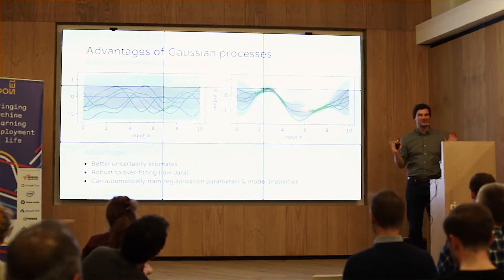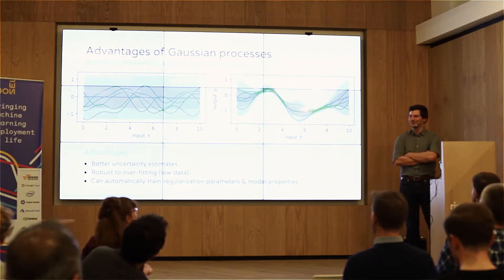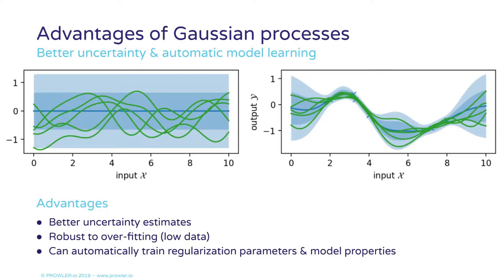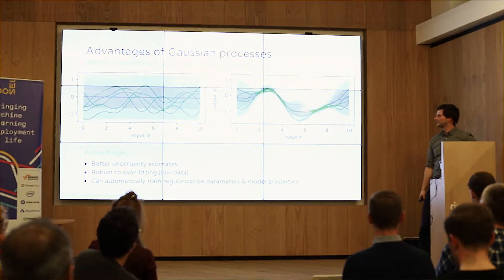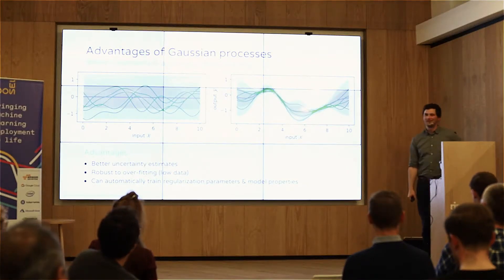So that's the whistle-stop intro to Gaussian processes. Long story short: better uncertainty estimates than neural networks with finite numbers of basis functions, robust to overfitting, and can automatically train your regularization parameters and model processes. I'll leave the disadvantages to the end.